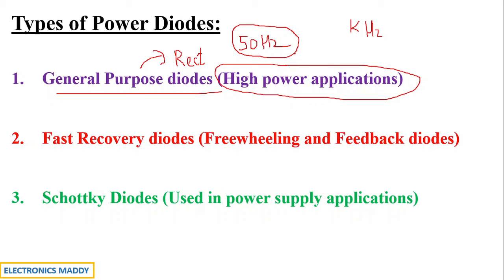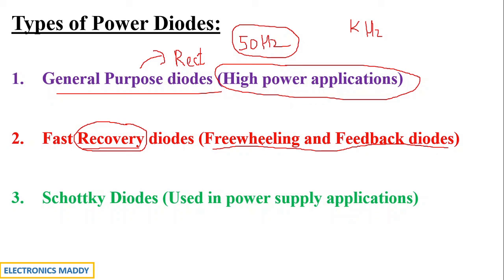Fast recovery diodes are used in freewheeling and feedback diode applications, which relates to the reverse recovery characteristics. In applications like inverters or choppers, a very short reverse recovery time (trr) is required. The roles of freewheeling and feedback diodes will be explained in detail when those converter circuits are covered.